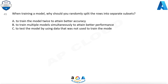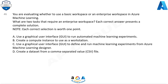The correct answer is C — Classification. Question 45: When training a model, why should you randomly split the rows into separate subsets? A) To train the model twice to attain better accuracy. B) To train multiple models simultaneously to attain better performance. C) To test the model by using data that was not used to train the model.